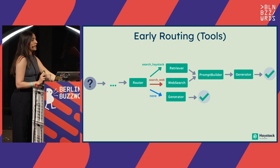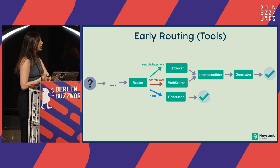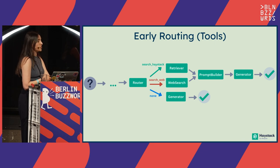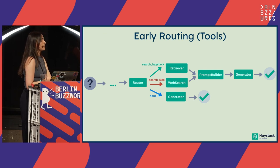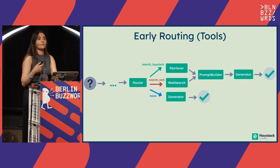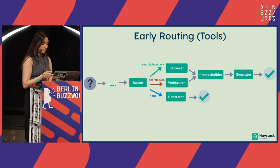Something you can do further here is go clever and maybe combine these two branches into one branch at some point. In the end of the day, both retriever and web search provide you the relevant information, and the prompt builder can use that to generate the answer. So you don't need two prompt builders or two generators, unless you like to use different prompts and different large language models for them.